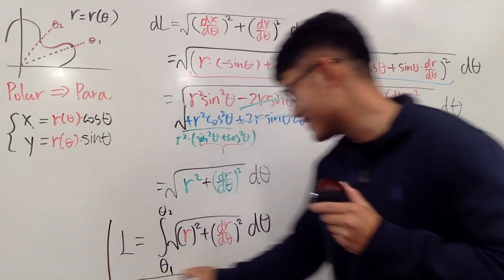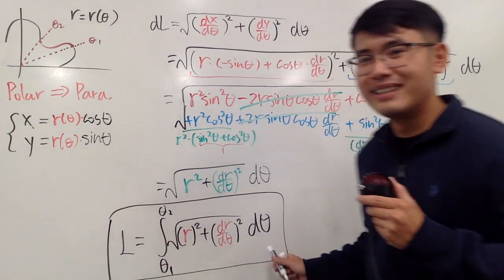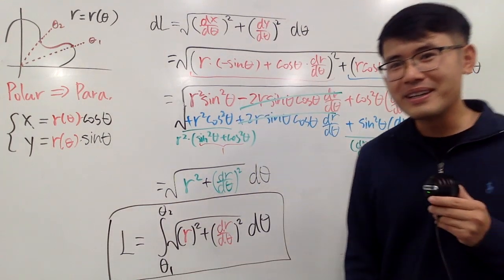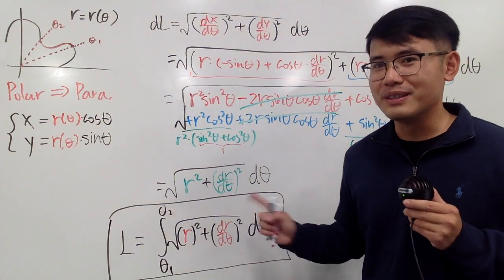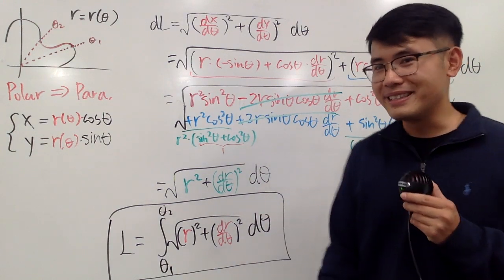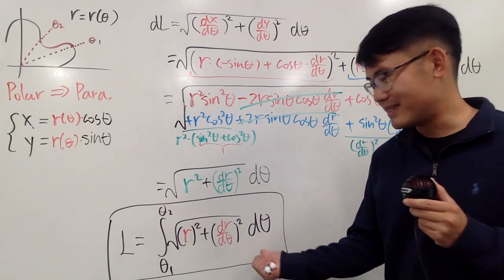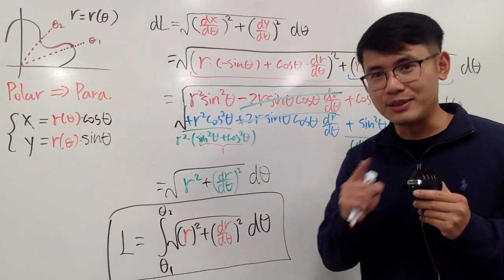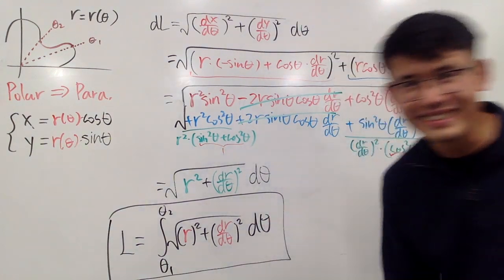Very nice — this is a proof of the polar arc length formula. I proved it here, whereas in class I typically don't go through the derivation. And this derivation also makes for good homework practice. Anyway, that's it!